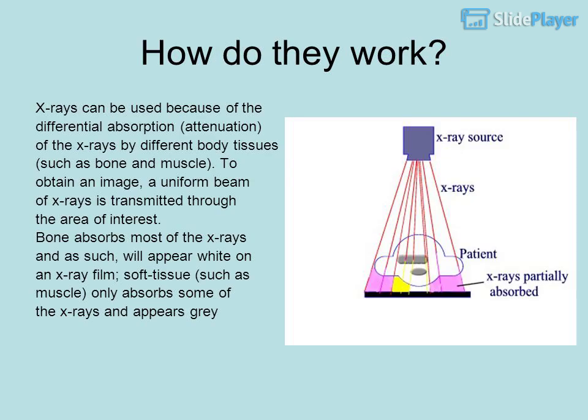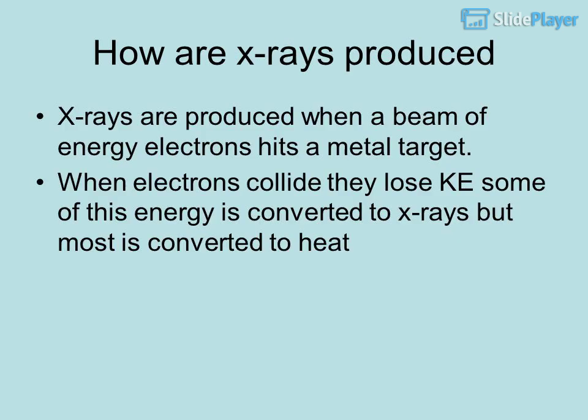X-rays can be used because of the differential absorption and attenuation of X-rays by different body tissues, such as bone and muscle. To obtain an image, a uniform beam of X-rays is transmitted through the area of interest. Bone absorbs most of the X-rays and will appear white on an X-ray film. Soft tissue such as muscle only absorbs some of the X-rays and appears grey.